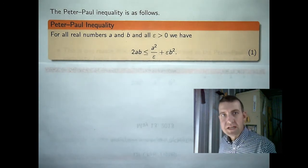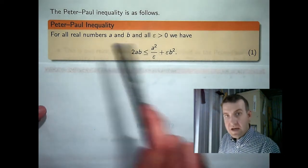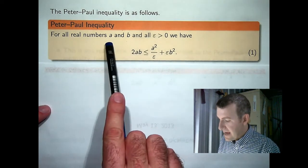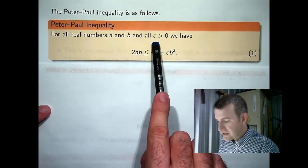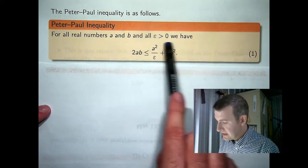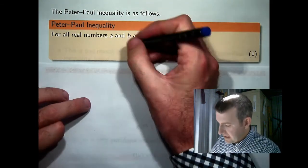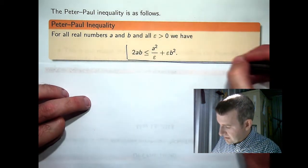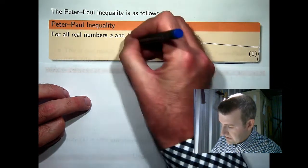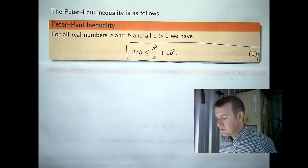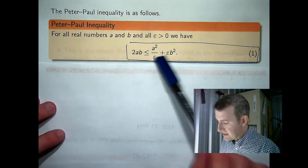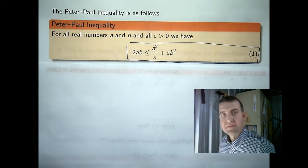What is the Peter-Paul inequality? For all real numbers a and b, and for all positive numbers epsilon, we have the following inequality holding: 2ab is less than or equal to a squared on epsilon plus epsilon times b squared.